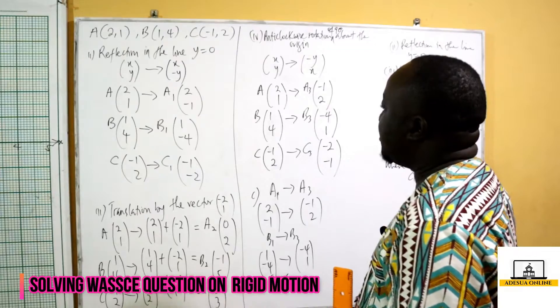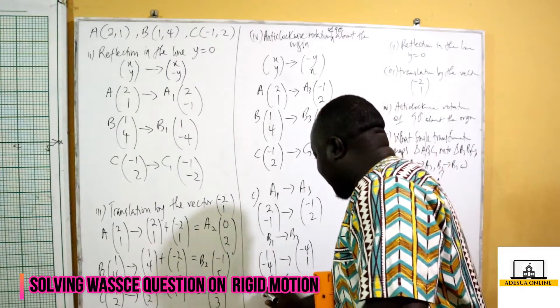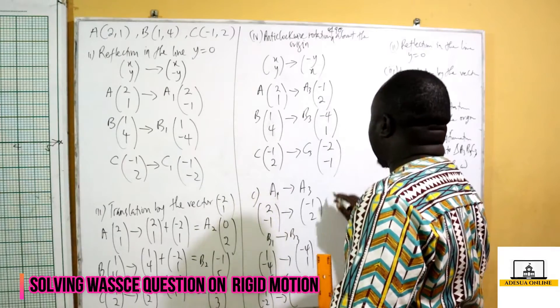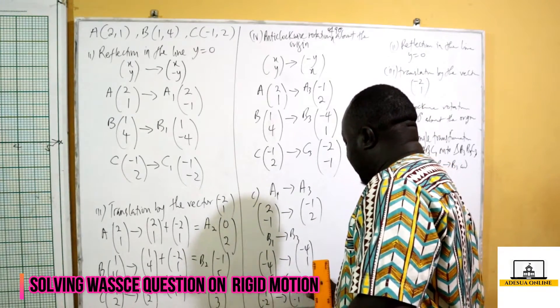C1 is (-1, -2), which maps onto C3. Our C3 is (-2, -1).